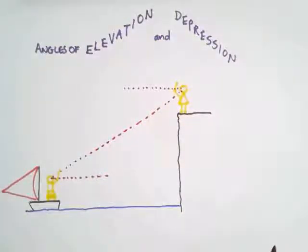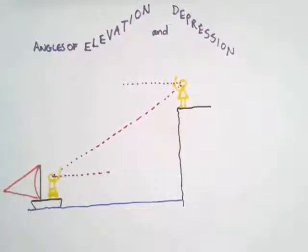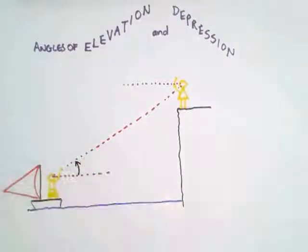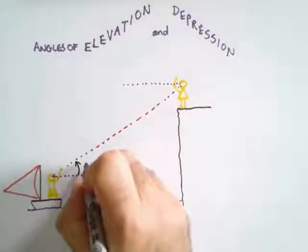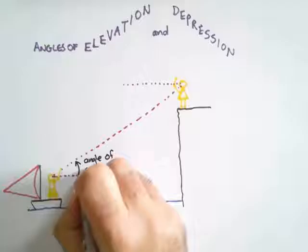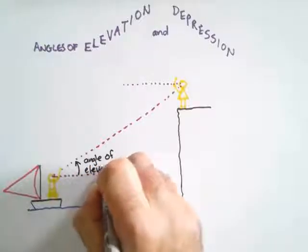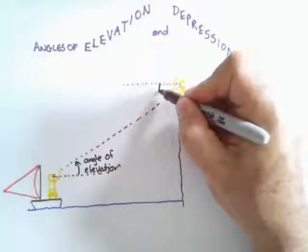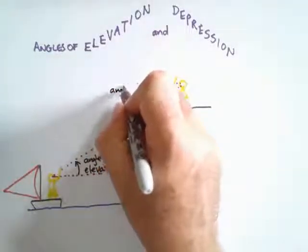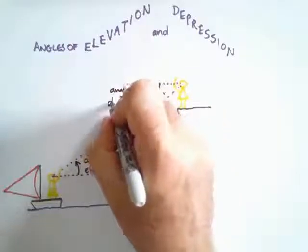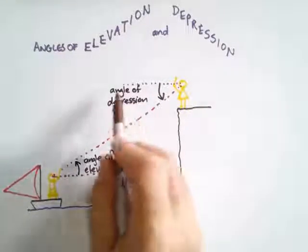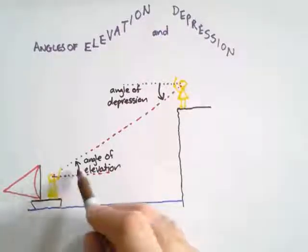The angle that the line of sight makes with the horizontal when you look up is called the angle of elevation. The angle that the line of sight makes with the horizontal when looking down is called the angle of depression.